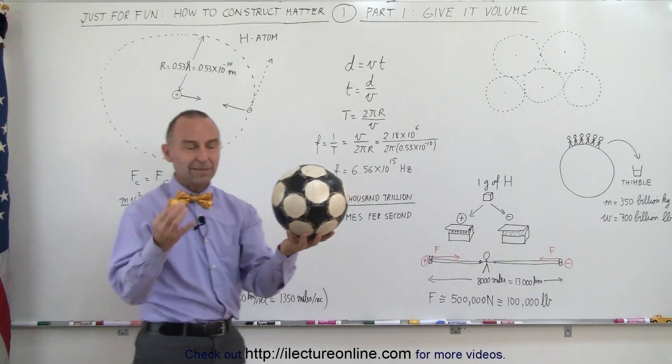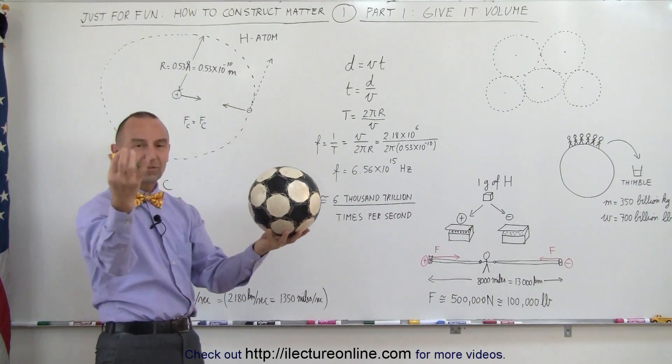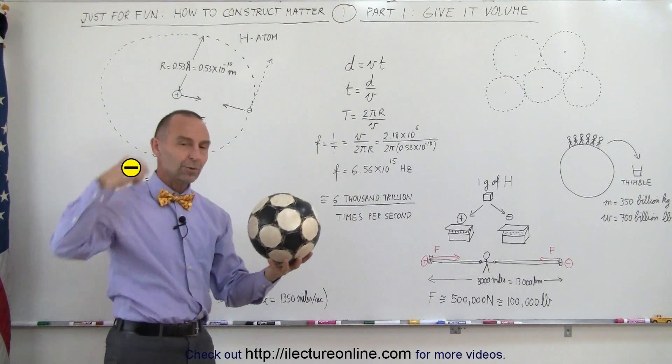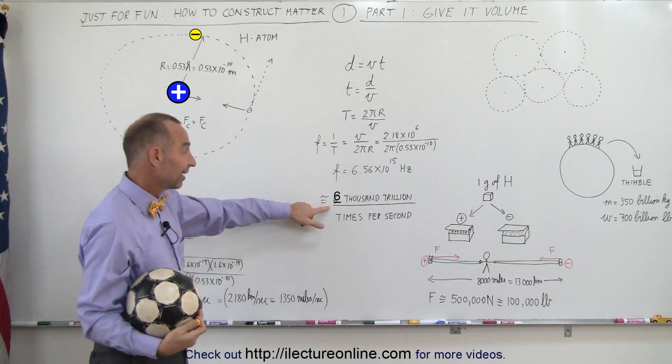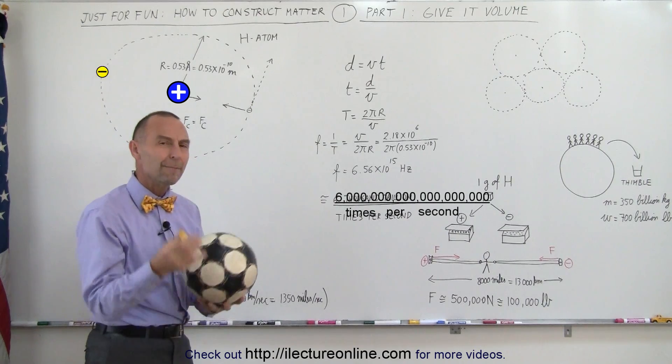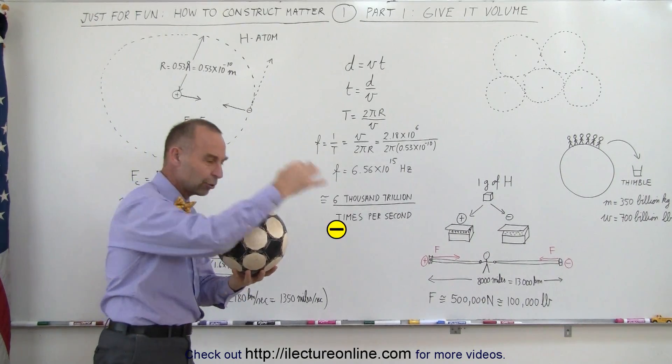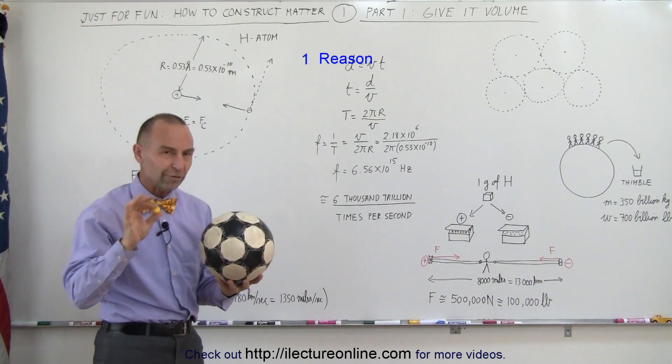Here's a soccer ball and a bead. This is the nucleus. This is the electron. Notice how the electron would go around the nucleus. Well, how many times? 6,000 trillion times per second. Imagine the amount of times an electron goes around the nucleus. Well, there's a reason for that.